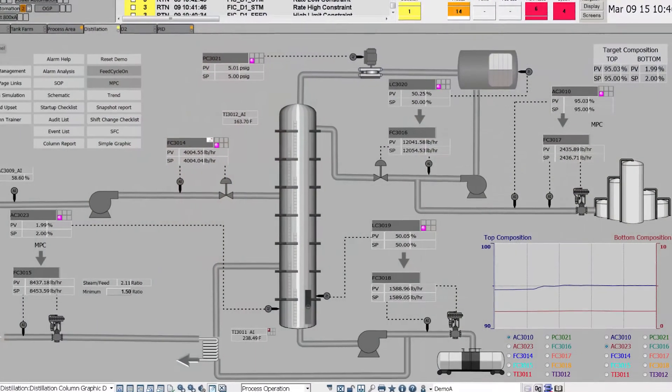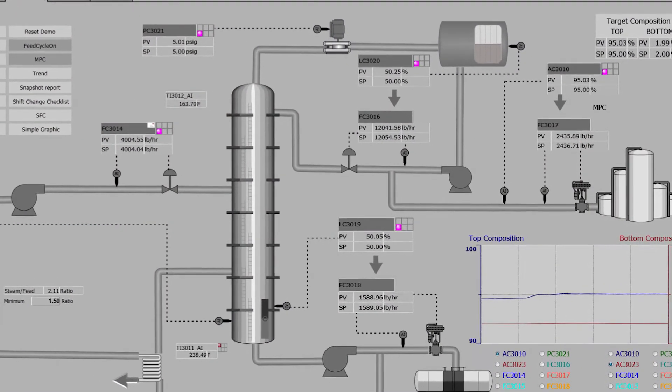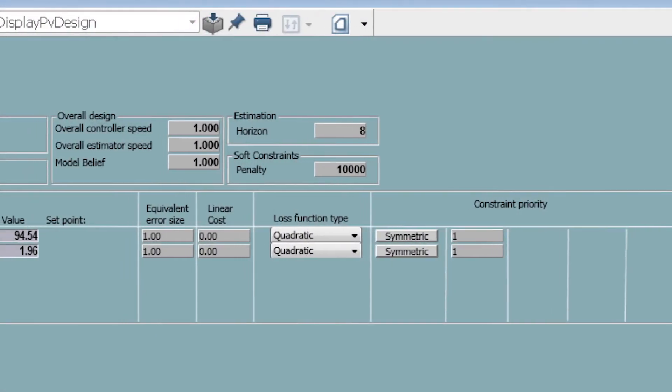The 800XA APC platform is an 800XA system extension which covers everything in a traditional MPC project from controller design, model building, to actual controller deployment.